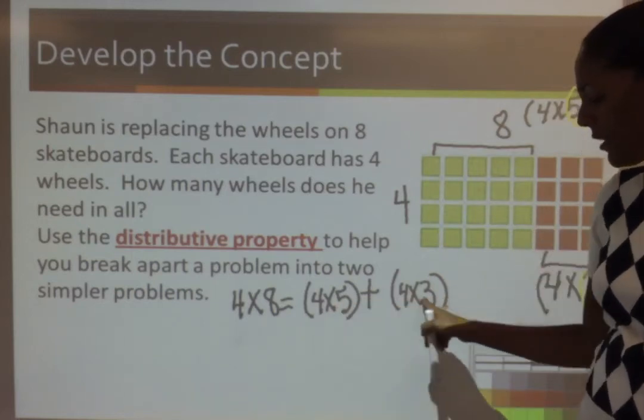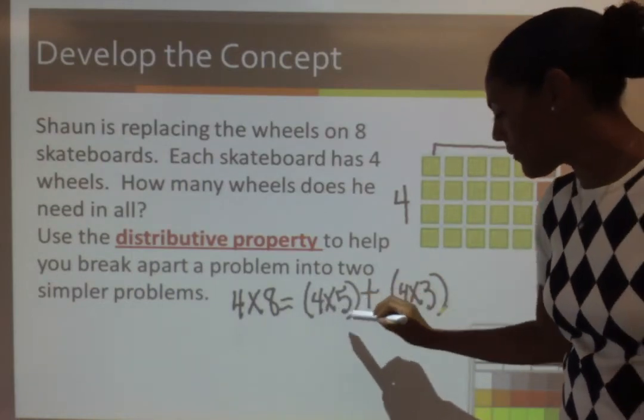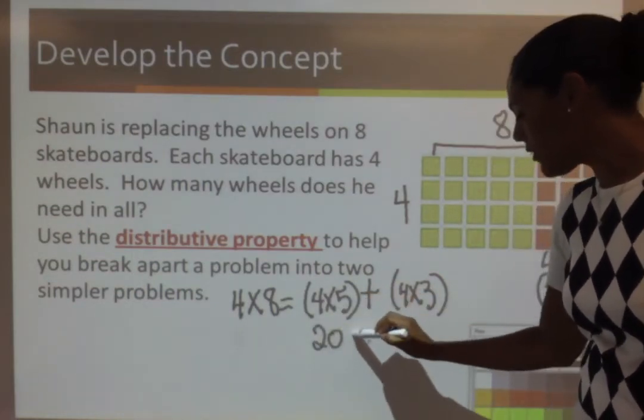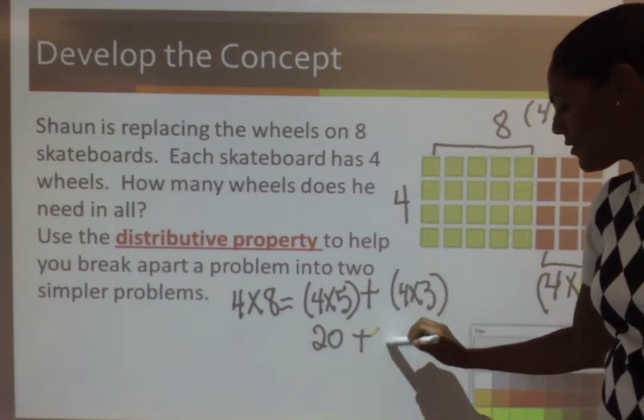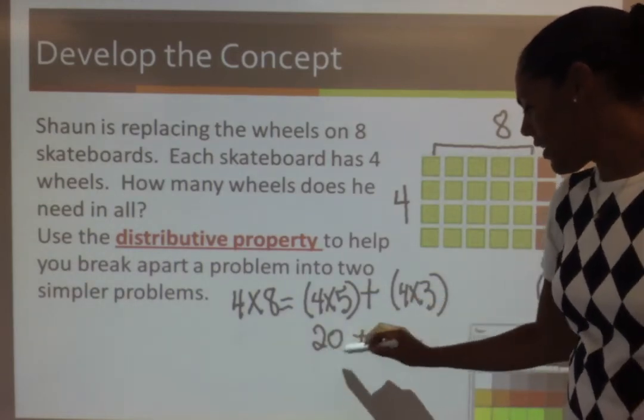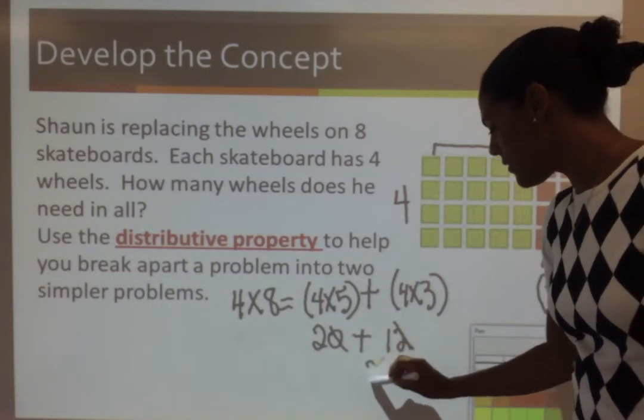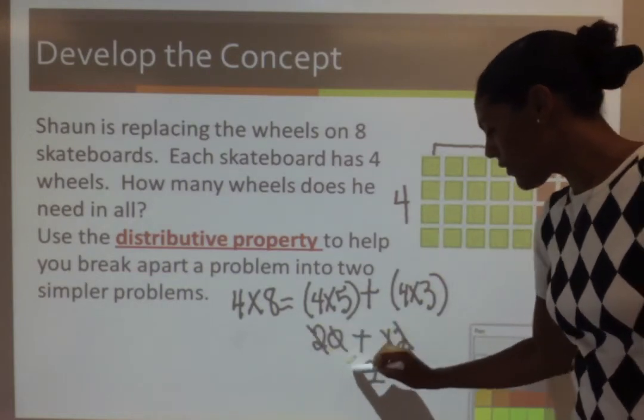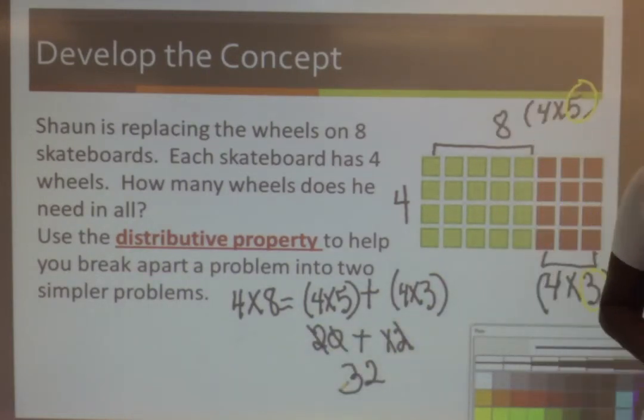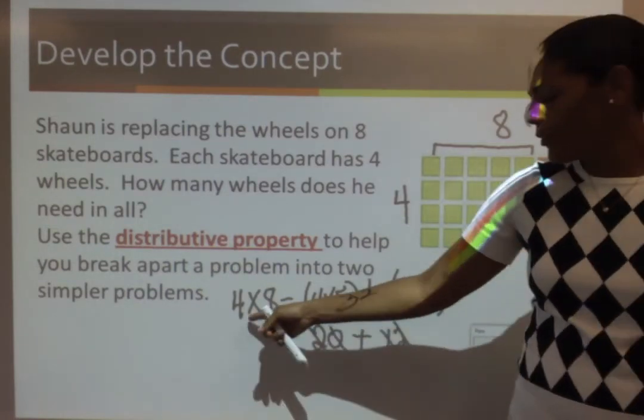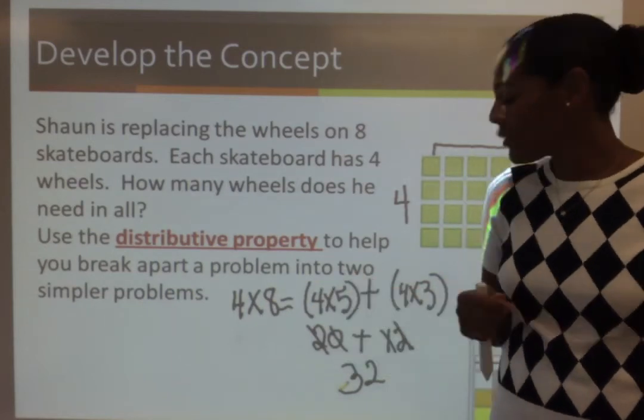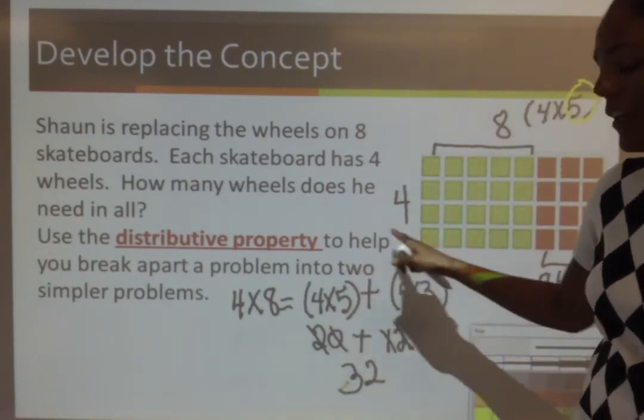So, we're going to finish by completing both of these problems. 4 times 5 is 20 plus, 4 times 3 is 12. And then if we add, we get 32. And that's how you use the distributive property to help you remember facts that are really hard to remember. 4 times 8 is one of those ones that is always hard for me. So, this is a very helpful strategy.